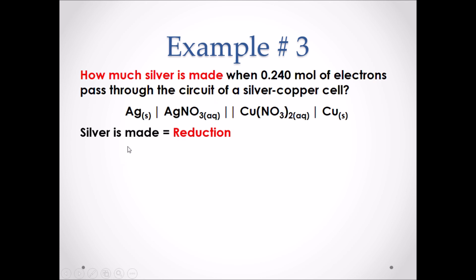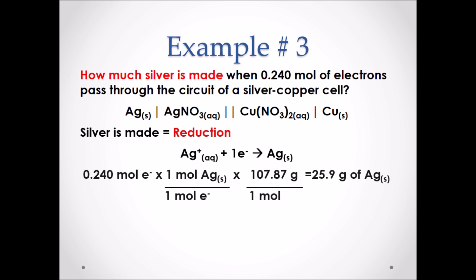Silver is made — this represents reduction, therefore silver must be the cathode. We can see from our cell notation that Ag+ is forming Ag solid. To balance this half reaction we have to add one electron to the reactant side, representing the gaining of electrons. We start with 0.240 moles of electrons and use the one-to-one molar ratio to get the moles of Ag solid, then multiply by the molar mass of silver. The answer is 25.9 grams of silver made in this cell.